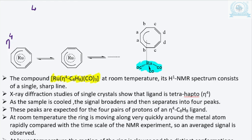At room temperature or high temperature, even though it is in eta-4 mode, we were getting only one peak. This is due to the whizzing of the ruthenium carbonyl group around the C8H8 ligand. The movement is so fast that all non-equivalent protons could not be distinguished — the molecule was behaving as a fluxional molecule.